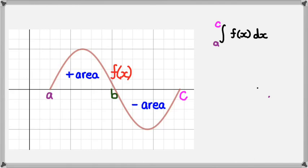If you remember, if you actually do it from c to a, you'd actually get an answer of zero in this case because you can see that half of it is above the x-axis and half of it is below.